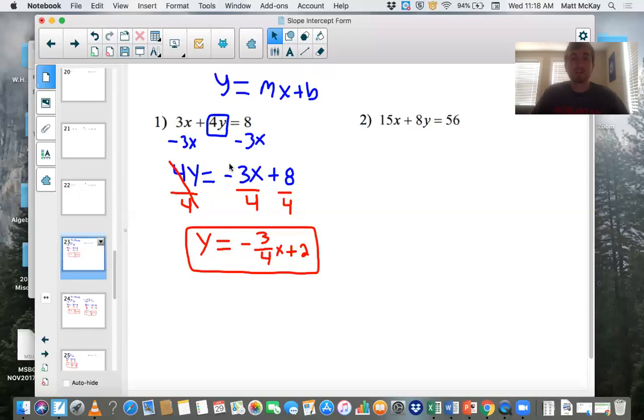Then from here in this blue line right here, one more step divide by four so y is by itself. Make sure to divide every single term by four. Doing so eight divided by four is two. Over here, you don't have to simplify this. Keep it as a fraction, right? Negative three-fourths x, negative three-fourths x.